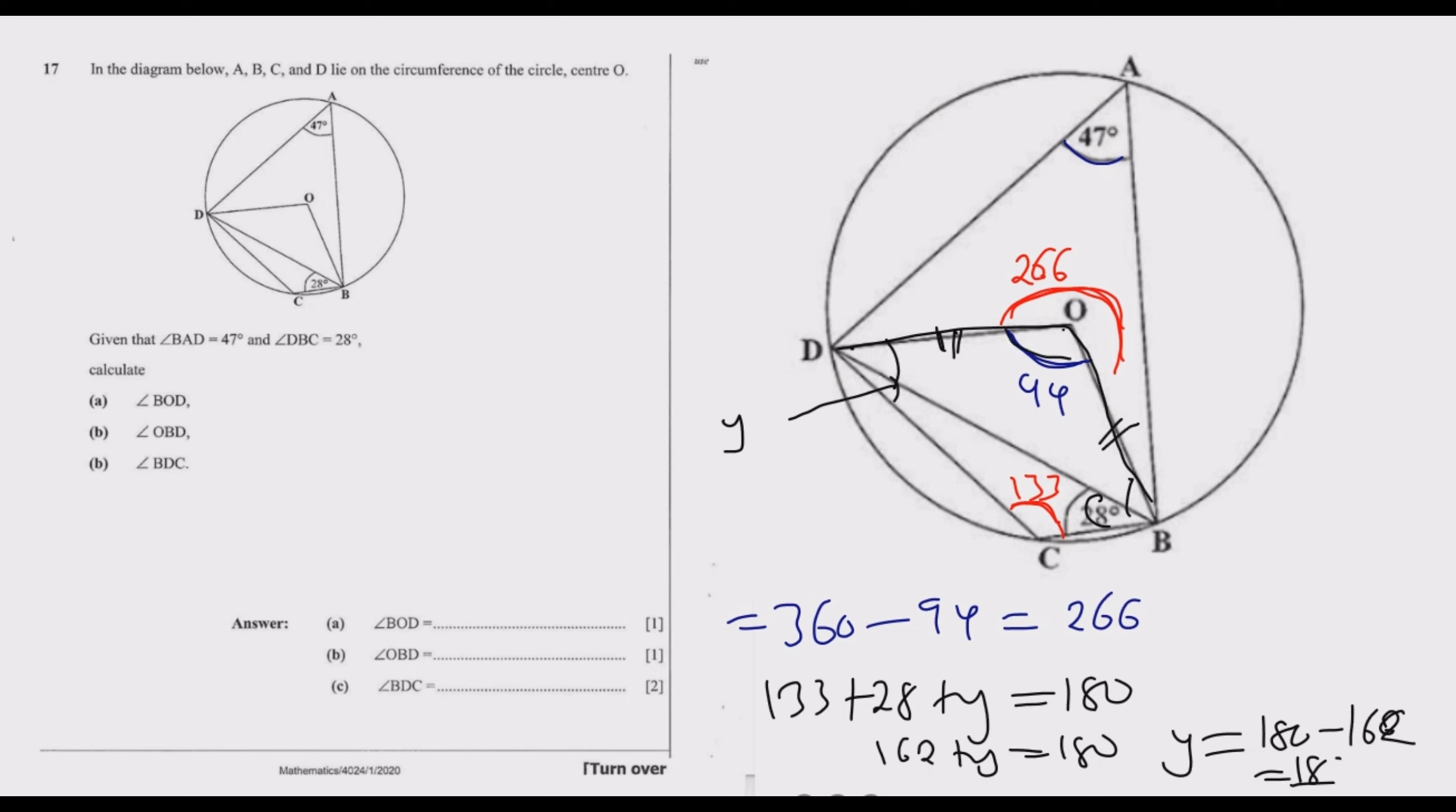We'll call this angle x and this angle x. So it's x plus x, which is 2x. Therefore, 2x plus 94 equals 180, so 2x equals 180 minus 94, which is 86. Dividing by 2, we get x equals 43 degrees.